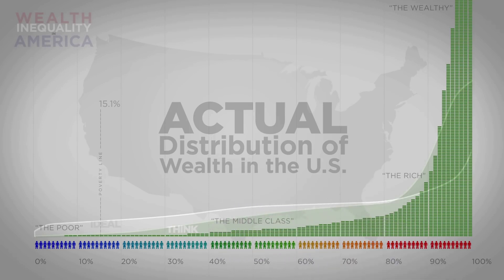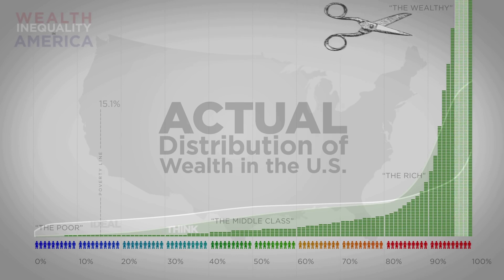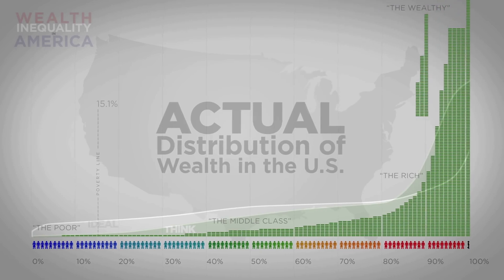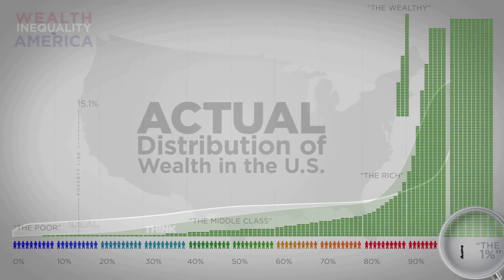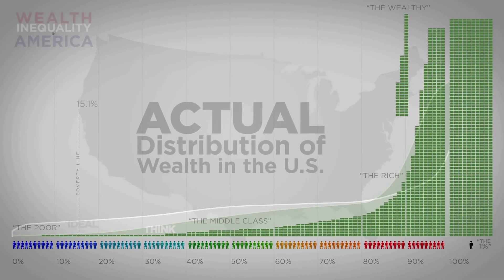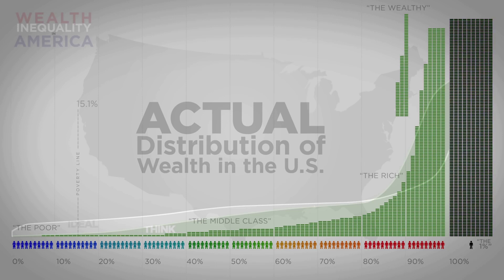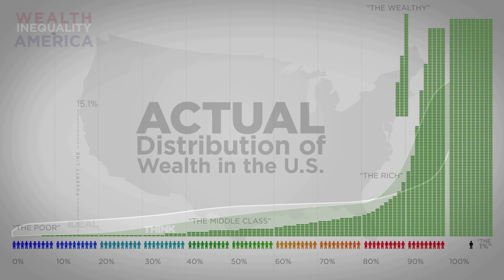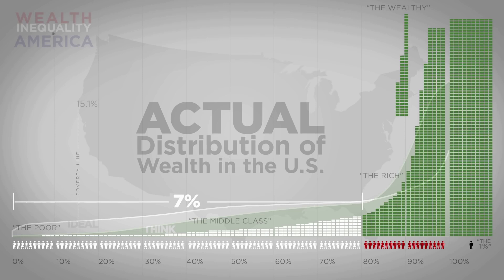Even the rich between the top 10 and 20 percentile are worse off. Only the top 10% are better off — and how much better off? So much that the top 2 to 5% are actually off the chart at this scale. And the top 1%? His stack of money stretches 10 times higher than we can show. 1% of America has 40% of all the nation's wealth. The bottom 80% — 8 out of every 10 people, or 80 out of these 100 — only has 7% between them.